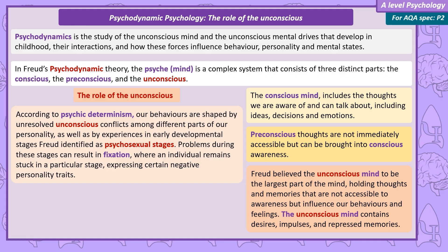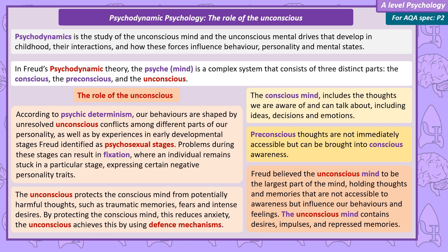This is called psychic determinism. The unconscious shaping of behaviour is due to trying to resolve a conflict between different aspects of personality, as well as how the individual experiences early life stages that Freud called psychosexual stages. Problems in these stages can lead to becoming stuck — fixation — and ultimately expressing certain negative personality traits. Freud also suggested that the unconscious protects the conscious mind from potentially harmful thoughts, such as traumatic memories, fears and intense desires, reducing anxiety through defence mechanisms. Three we need to know are repression, denial and displacement.